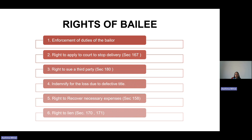The last right is the right to lien, which means the right to retain. If the bailor does not make the necessary payment to the bailee, the bailee has the right to retain the goods until the payment has been made. So right to lien means the right to retain the goods. I hope we are clear with the basic parts — meaning of bailment, types of bailment, essential elements of bailment, and duties and rights of the bailee. This was all about the lecture. We will continue with the next topic in the next presentation. Thank you.